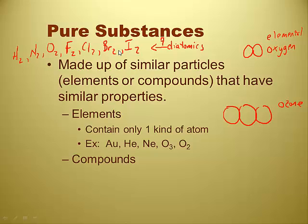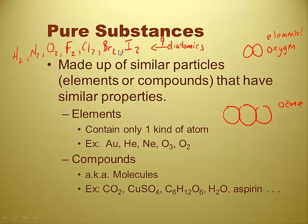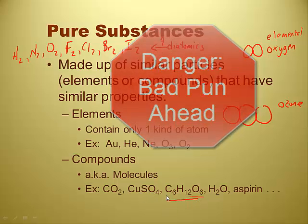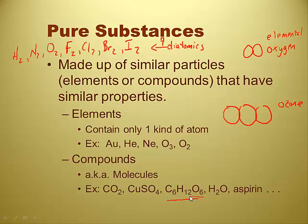Compounds are different from elements because they have more than one kind of atom. Sometimes we call compounds molecules. Some examples: carbon dioxide has carbon and oxygen atoms; copper sulfate has copper, sulfur, and oxygen; sugar has six carbons, twelve hydrogens, and six oxygens; water is obviously a compound with hydrogen and oxygen; and aspirin is another compound. There are tons and tons of them.